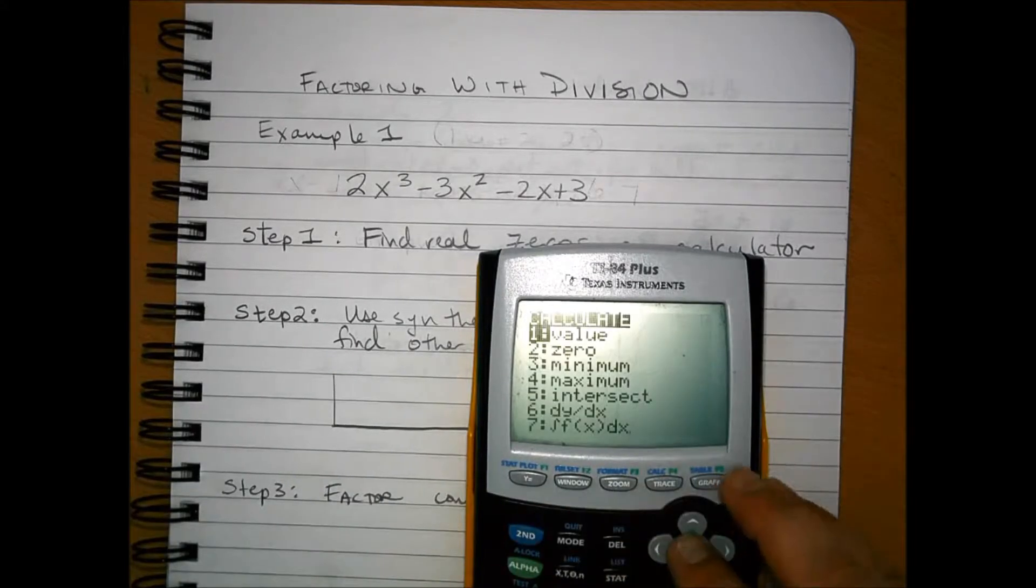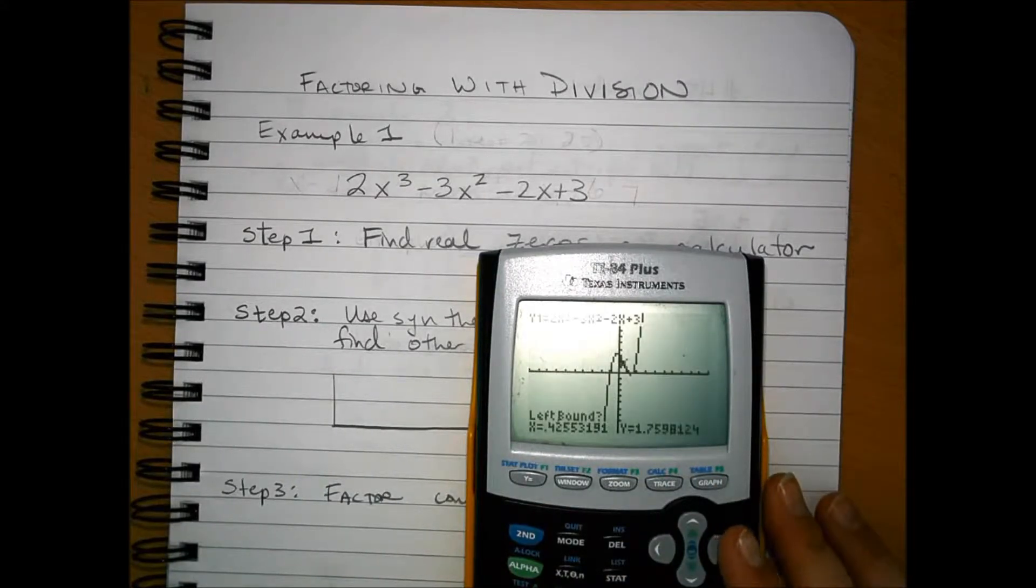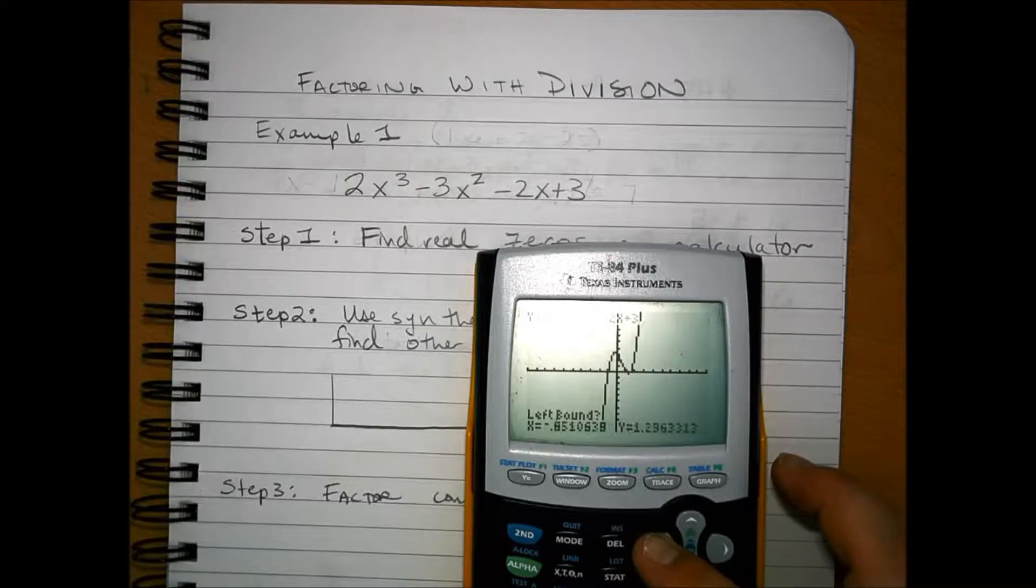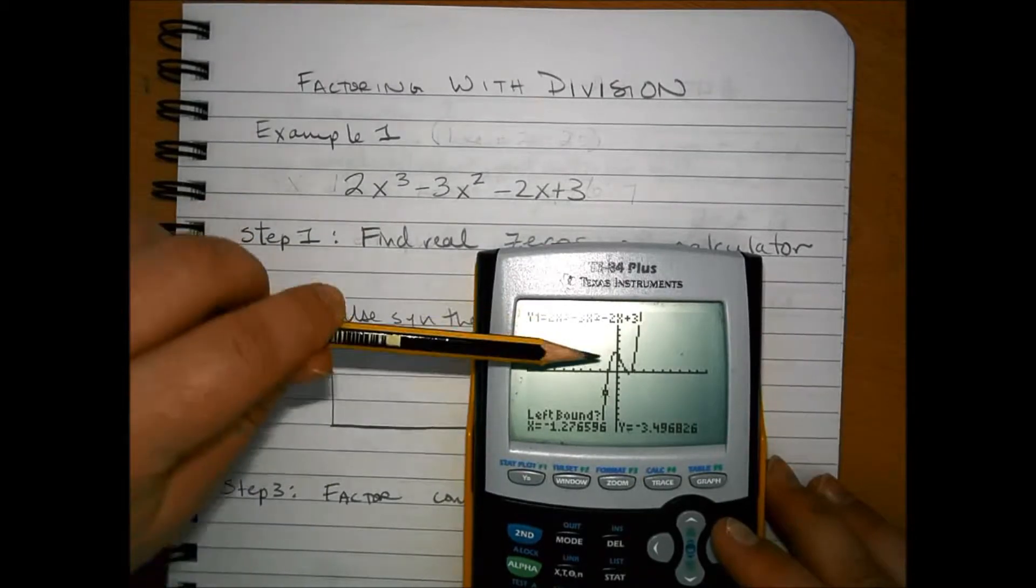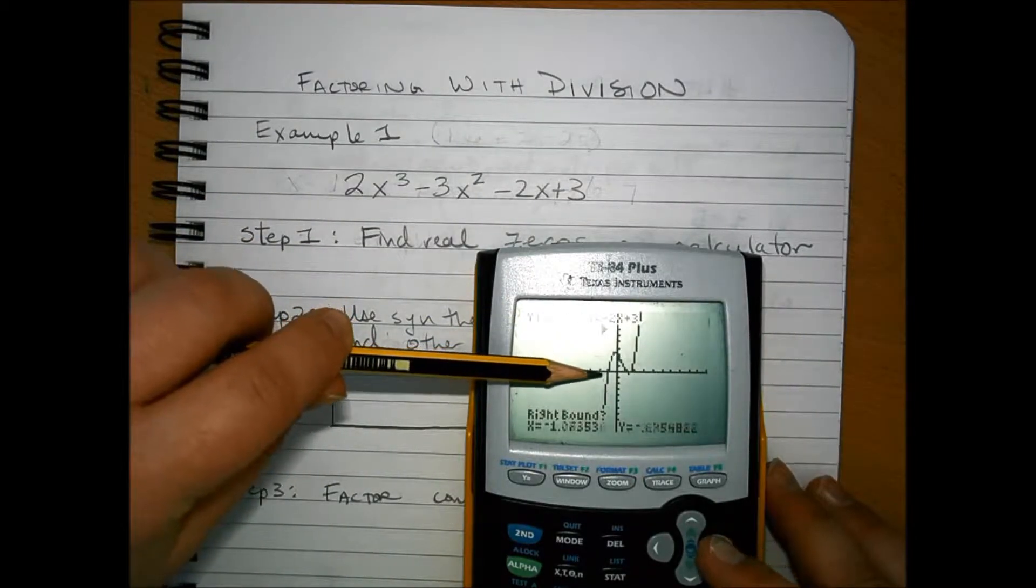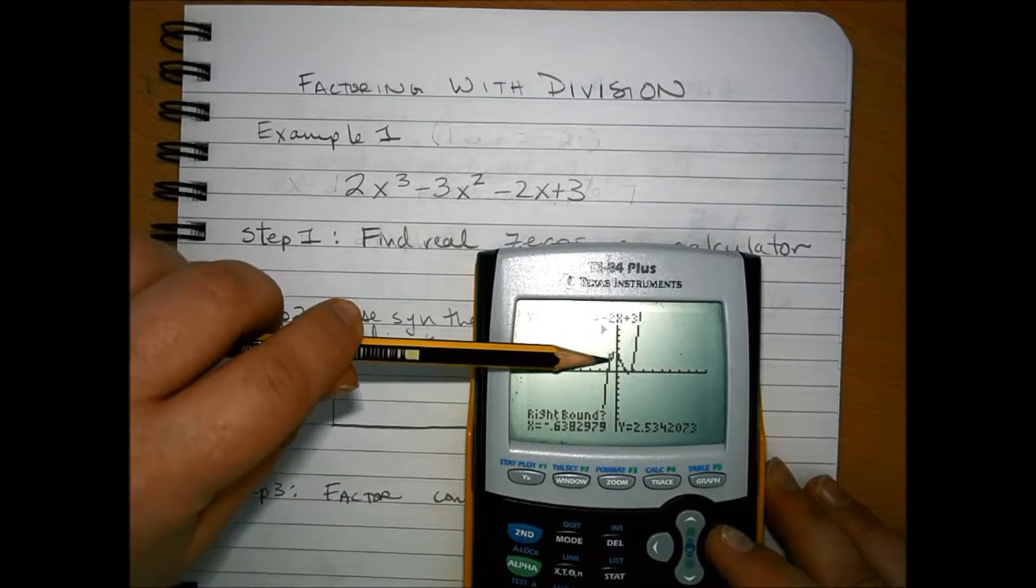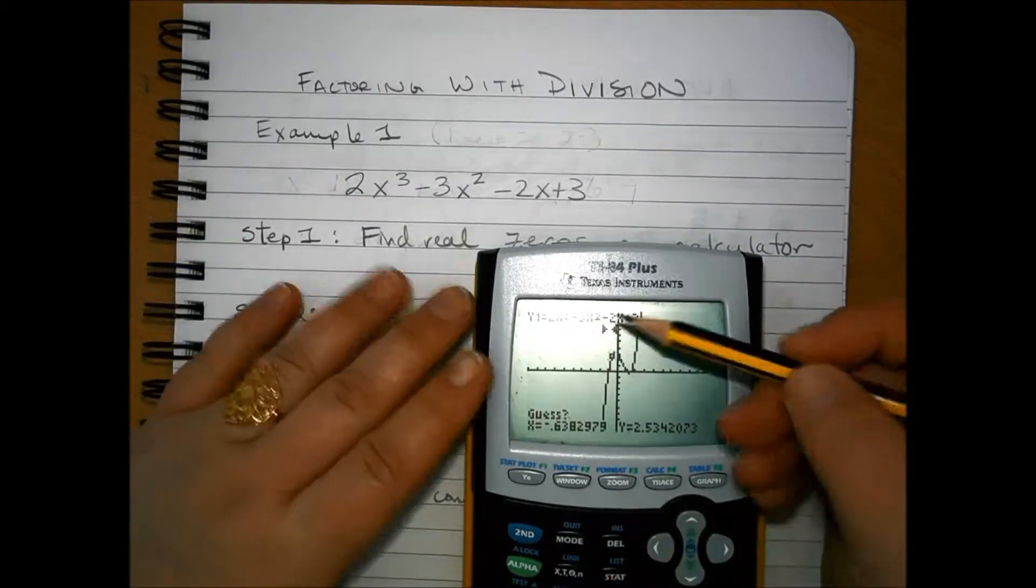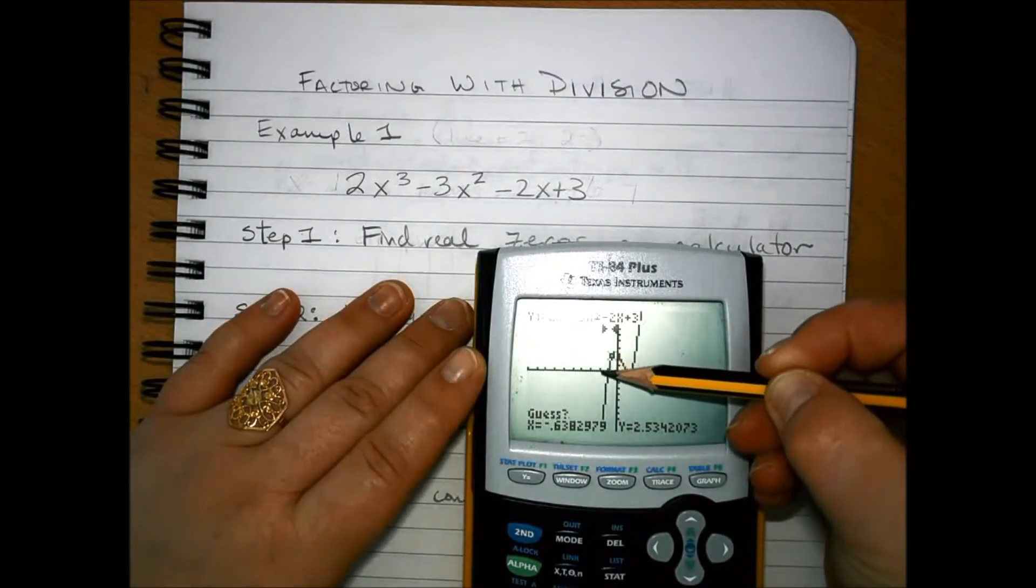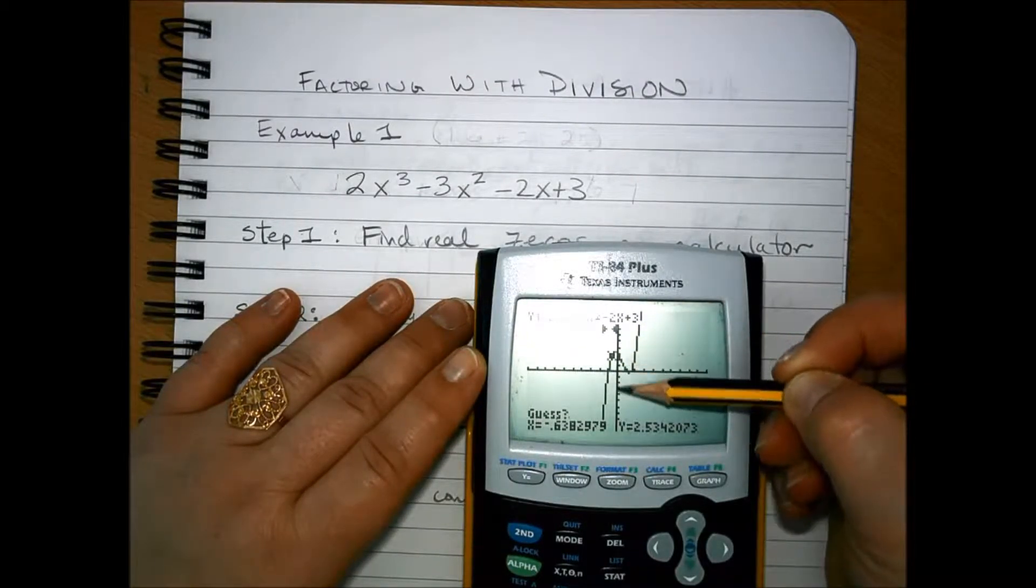We're going to use the zero function on the calculator, like we did with the quadratics. We're going to set up the left bound, which is to the left of the zero there, and then the right bound, which is going to be to the right of the zero there. You can see that your two arrows, if we drop down lines at those arrows, those create the boundaries.